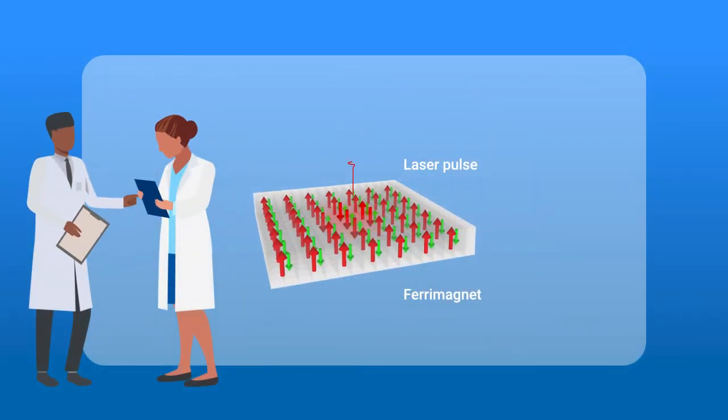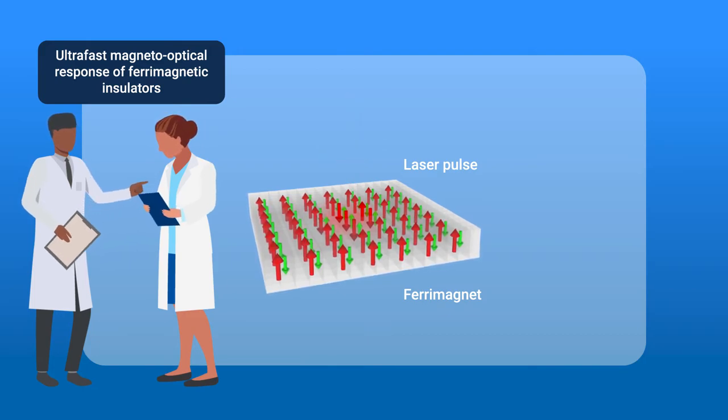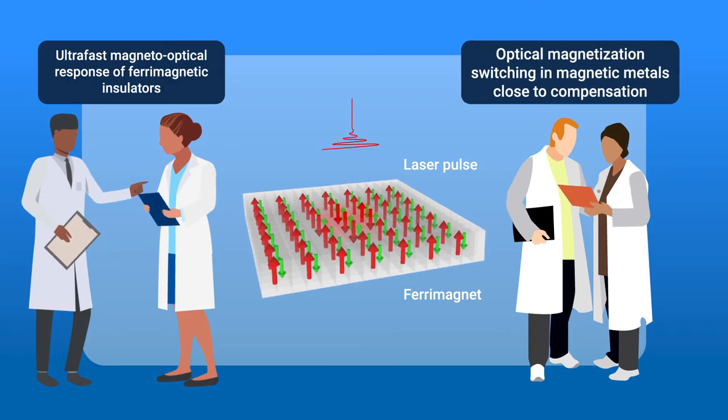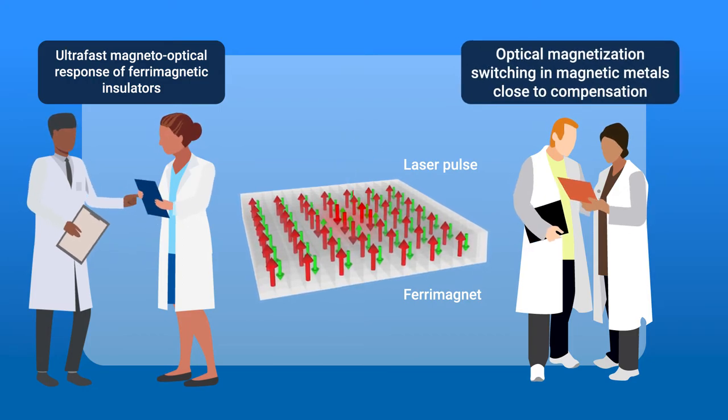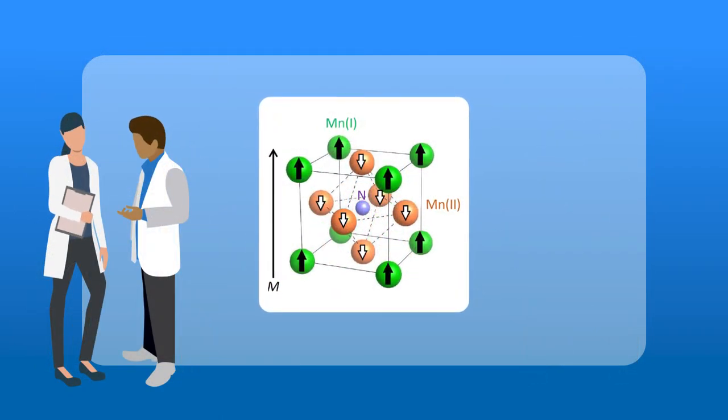Stupakowicz and Sato discuss the ultra-fast magneto-optical response of ferromagnetic insulators, while Ihama and co-workers discuss the optical magnetization switching in magnetic metals close to compensation.